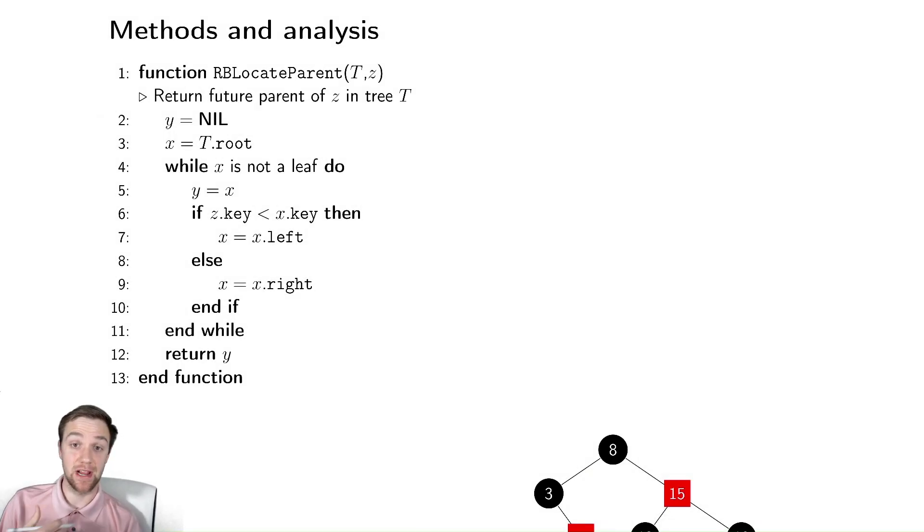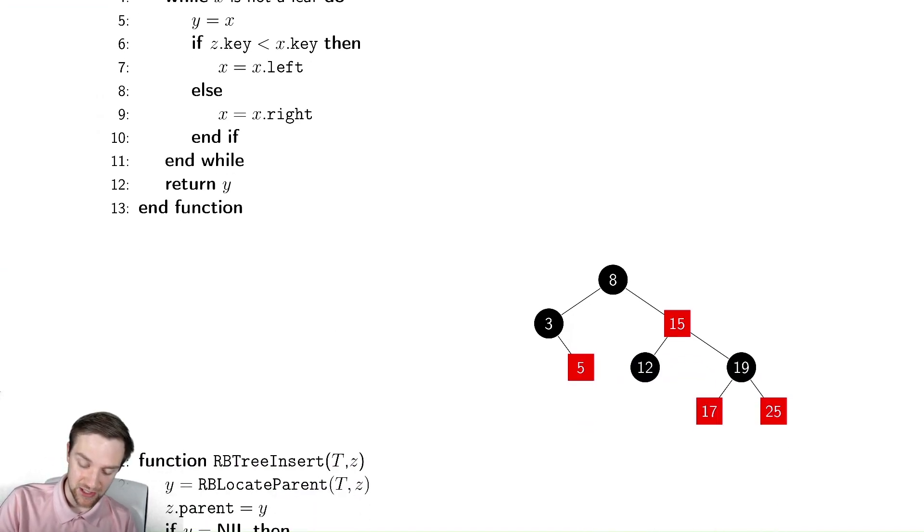Let's begin discussing how do we insert elements into a red-black tree. Just like we saw when we were doing binary search trees, we're going to have a method for locating the parent. It's effectively the same, the only thing we need to be careful of here is that our leaves are actually nil pointers. Our parent should never be one of those nil pointers, it should always be one of the internal nodes.